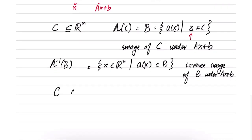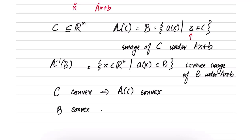The key result is: if C is convex, then its affine transformation A(C) is also convex. Likewise, if B is convex, its inverse image under the affine transformation is also convex. So both the affine transformation and its inverse preserve the convexity of a set.